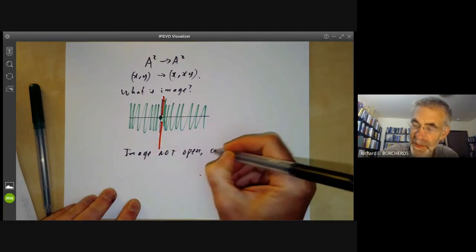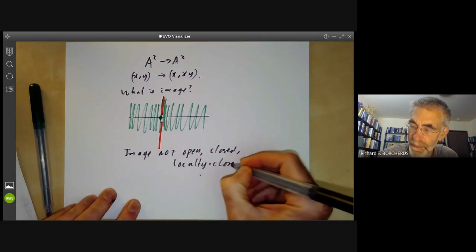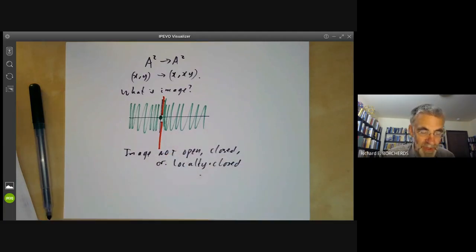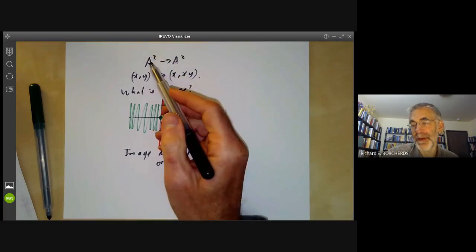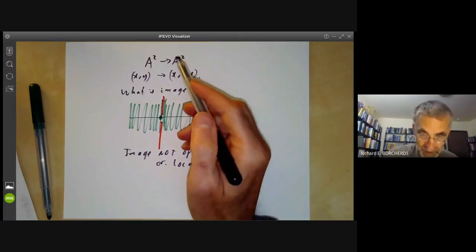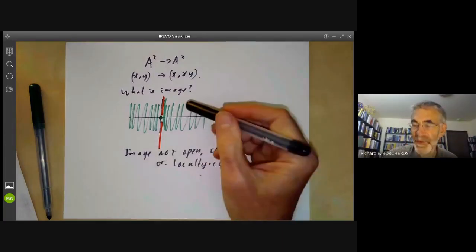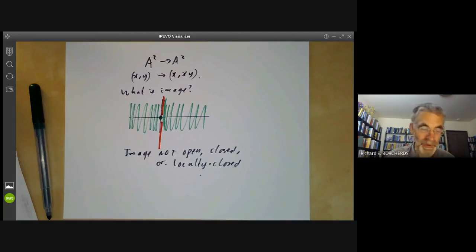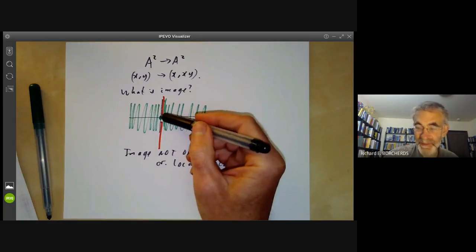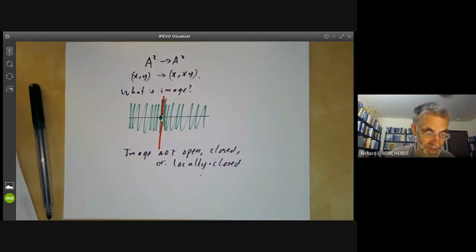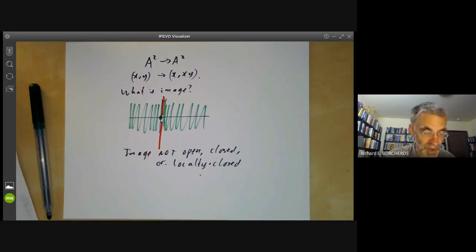The point of this example is the image can be quite complicated. The image is not open, it's not closed, it's not even locally closed. So there are no particularly easy statements you can make about what the image of a closed set is under a morphism. There's a theorem of Chevalley saying that it always has to be a constructible set, which means it can be constructed from open and closed sets by taking unions and intersections and complements, but in general there's no easier type of set that the image of a closed set is. On the other hand, we will see that for projective manifolds the image of a closed set is always closed.